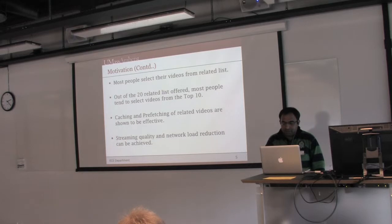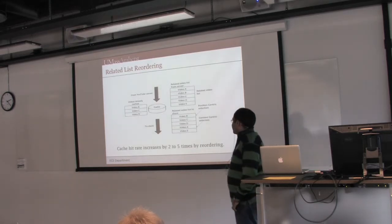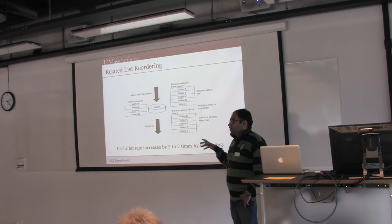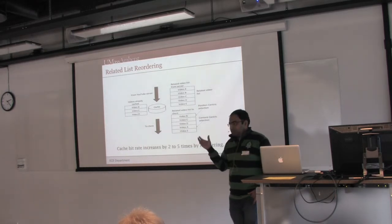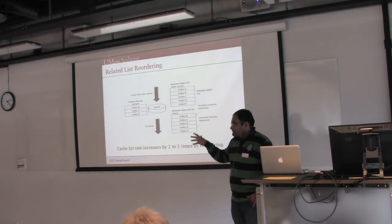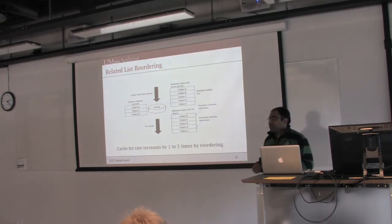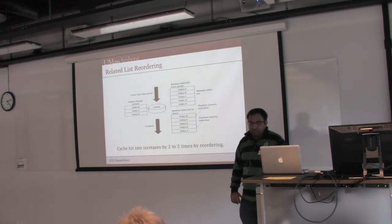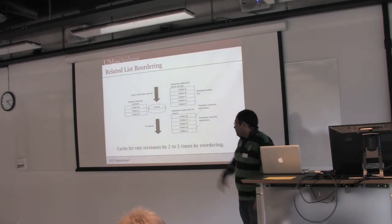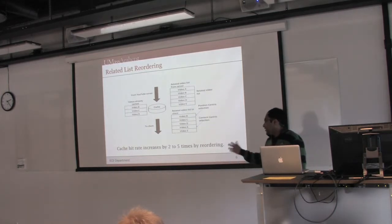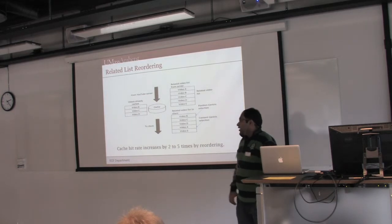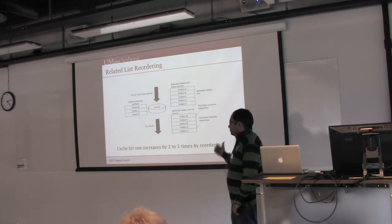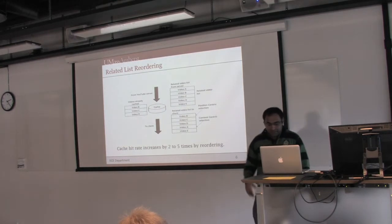We also recently showed a related list reordering approach, which I will be talking about at MMSYS 2013. We have a cache storing previously requested videos, and for every next request we reorder the list based on content already in the cache — pushing content from the bottom to the top so that users, who usually select from the top of the list, benefit. We showed that cache hit rate increases by 2 to 5 times using this reordering approach. This result is also used in the present paper.